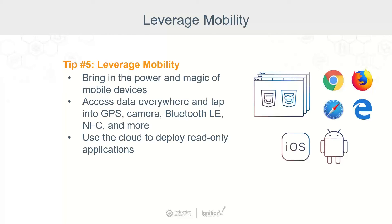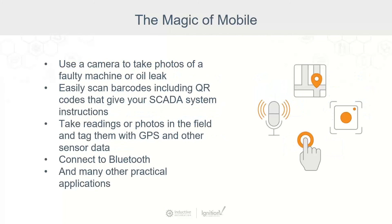Mobility gives operators and managers access to data everywhere, and it can tap into things like GPS, camera, Bluetooth, NFC, and more. It also gives you the option to use the cloud for deploying read-only applications. Within on-premise networks, mobility requires Wi-Fi and people can open the application on their phones. Native apps leverage phone sensors — we can use cameras to take photos of faulty machines, scan barcodes and QR codes to give instructions or navigate to relevant areas of the application, take readings or photos in the field tagged with GPS data, use GPS for geofencing, and connect to Bluetooth low-energy devices.